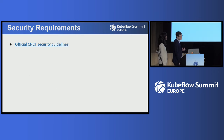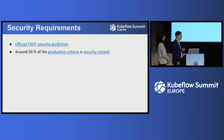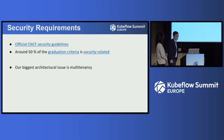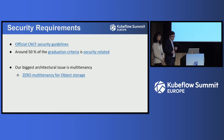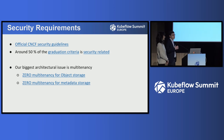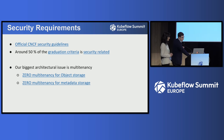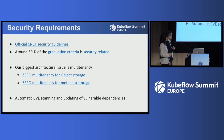Regarding security requirements, there are the official CNCF guidelines, and even the CNCF graduation criteria contains a lot of security-related requirements. We are still examining it and going through the checklist with the CNCF, so it's work in progress. In the meantime, let's talk about architectural issues — the major one is multi-tenancy, especially within Kubeflow Pipelines. We have zero multi-tenancy for object storage as well as zero multi-tenancy for metadata storage, meaning these storage systems are not isolated per user, which is a severe problem for enterprise customers. There are some downstream solutions, but it's not yet properly implemented upstream.